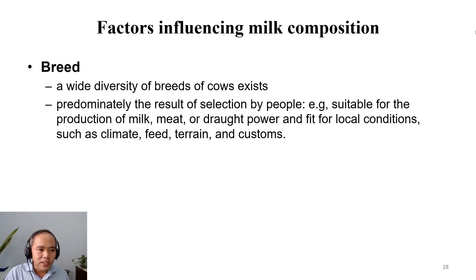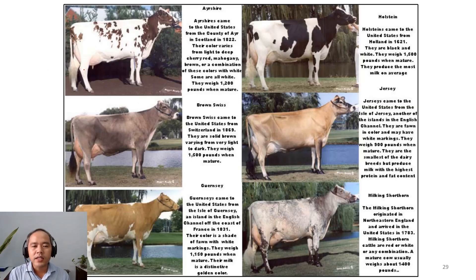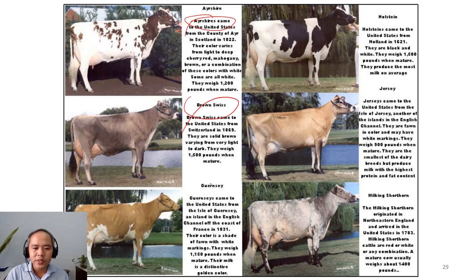The first factor is the breed of cows. There are a number of dairy cow breeds. The typical dairy cow breeds you need to learn by name are: Ayrshire, Brown Swiss, Guernsey, Milking Shorthorn, Jersey, and Holstein.